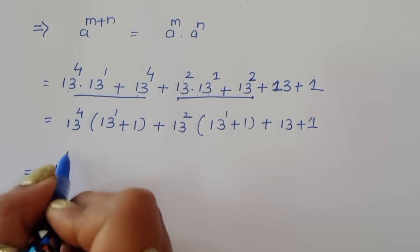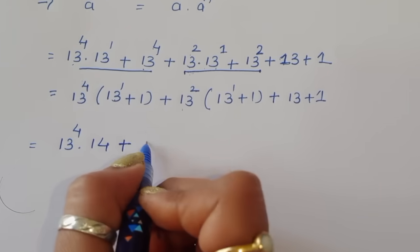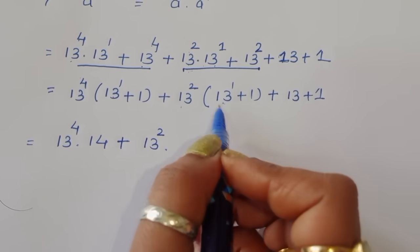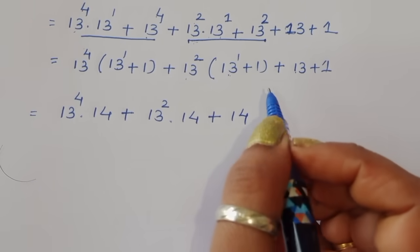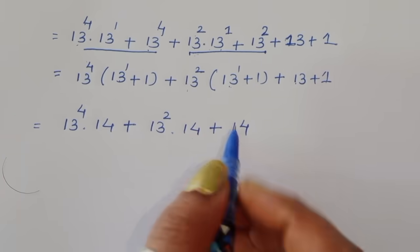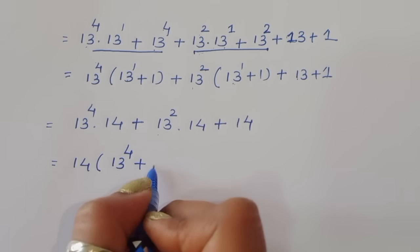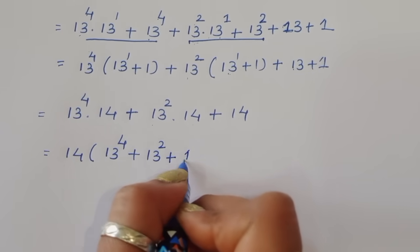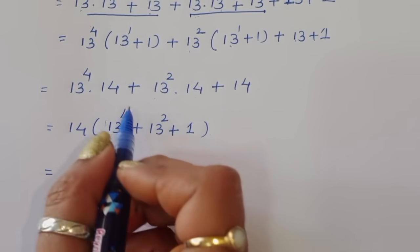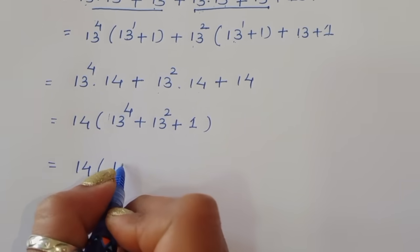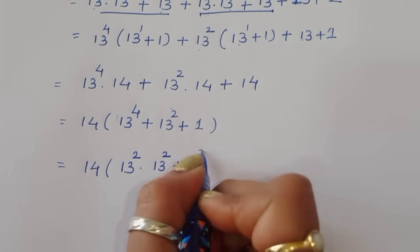The left bracket gives 13 power 1 plus 1, which is 13 plus 1 equal to 14. So we get 13 power 4 times 14, plus 13 power 2 times 14, plus 14. Now 14 is common, so we take 14 common. The left bracket is 13 power 4 plus 13 power 2 plus 1. Now 13 power 4 equals 13 power 2 times 13 power 2.